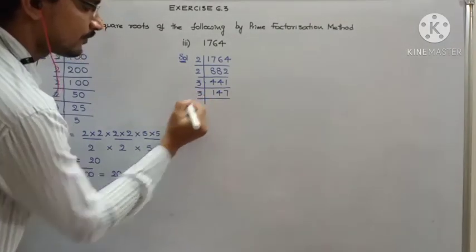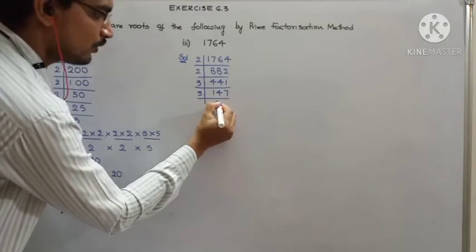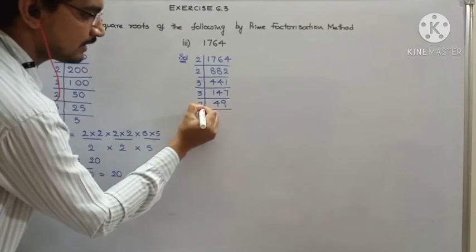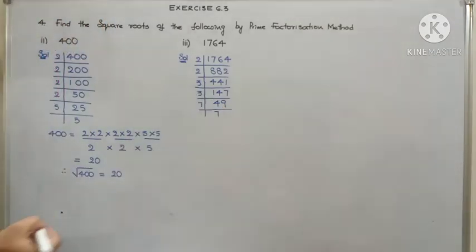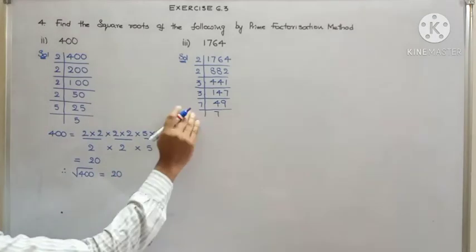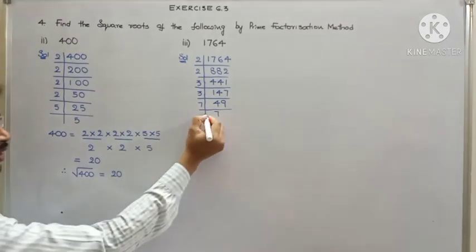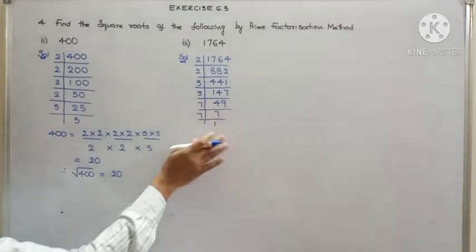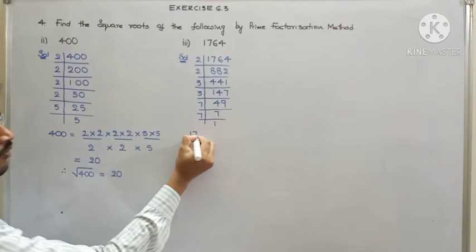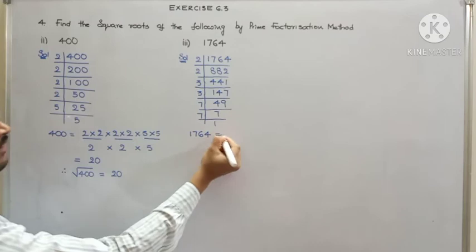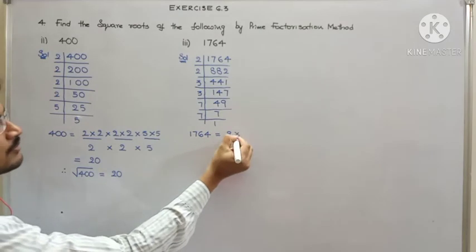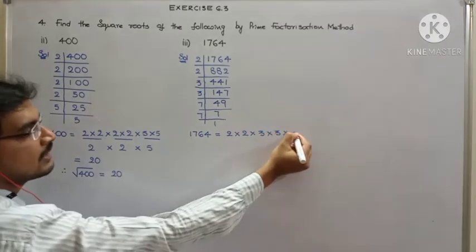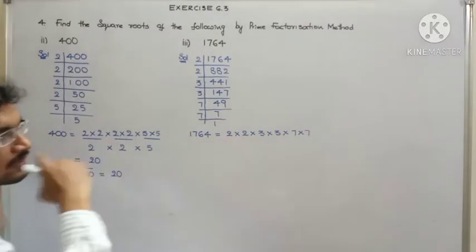Now, as we can't cancel this in 2 table, we will check for the next prime number 3. 3 times 147 gives 441. Again, we will take 3. 3 times 49 gives us 147. As you know, 7 times 7 gives us 49. So we are done with this. If you want, you can do the process by writing 7 times 1 as 7. Either ways, both the answer will be same.